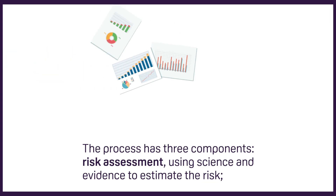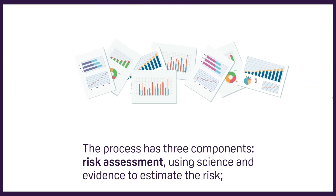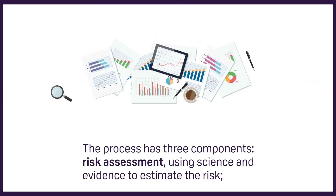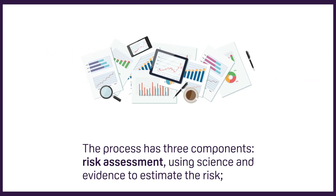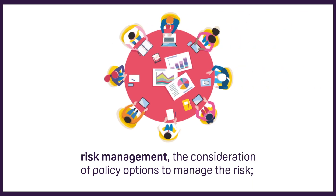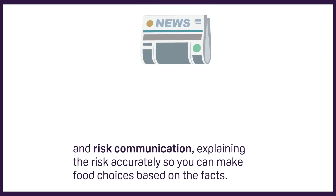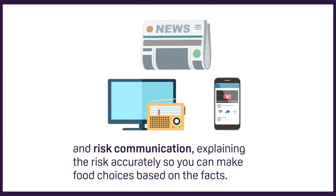The process has three components – risk assessment, using science and evidence to estimate the risk; risk management, the consideration of policy options to manage the risk; and risk communication, explaining the risk accurately so you can make food choices based on the facts.